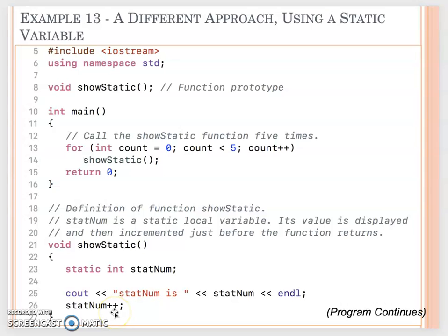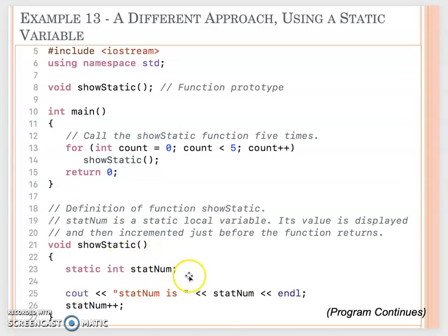After displaying the value, staticNum++ increments it using post-increment. The showStatic function is called five times from main using a for loop from 0 to less than 5. The first call displays 0, then increments to 1. The second call displays 1, then increments to 2. This continues so that calling the function five times will display 0, 1, 2, 3, 4, because the static variable's memory location is retained even after the function finishes.